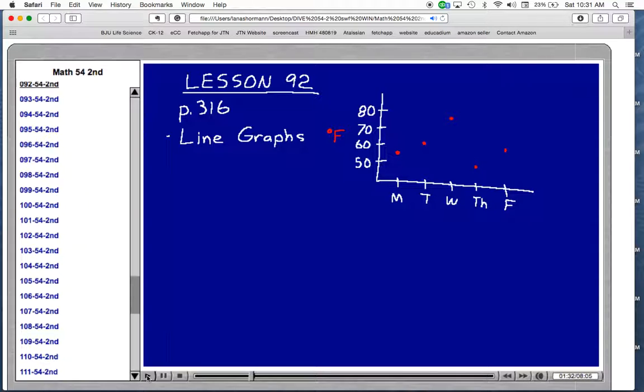And so what you could do is you could connect these dots basically. And that's what a line graph is. You have line segments there, or sometimes there might be just a straight line representing some information. And so like in this line graph, we can see how the temperature changed throughout the week from Monday to Friday.